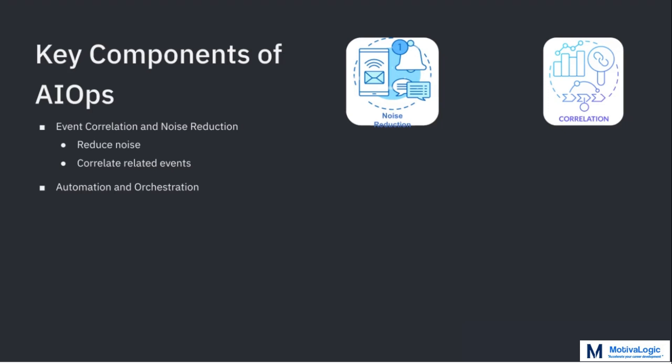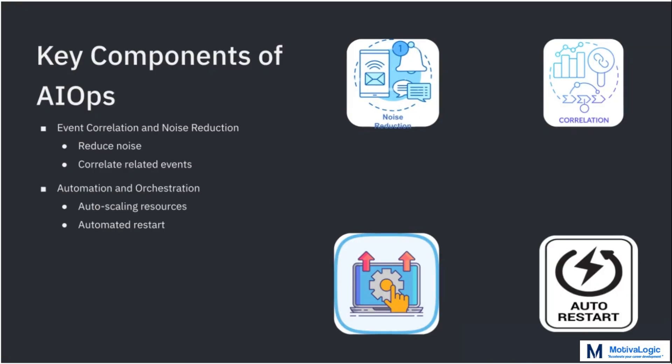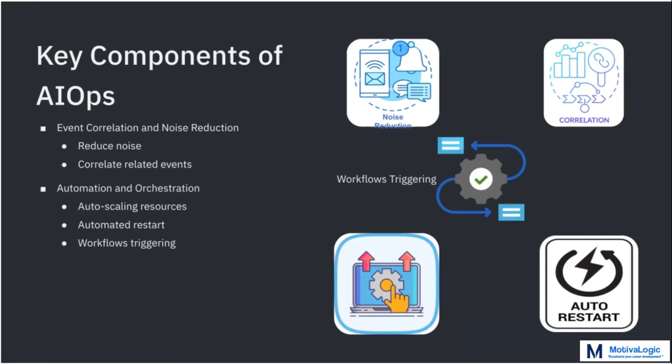Fourth, automation and orchestration in AIOps. AIOps facilitates the automation of routine IT tasks and responses to detected issues, such as auto-scaling resources during peak usage, automatically restarting failed services, and triggering workflows for complex incident resolution. This automation reduces human intervention, accelerates response times, and minimizes the risk of human error.